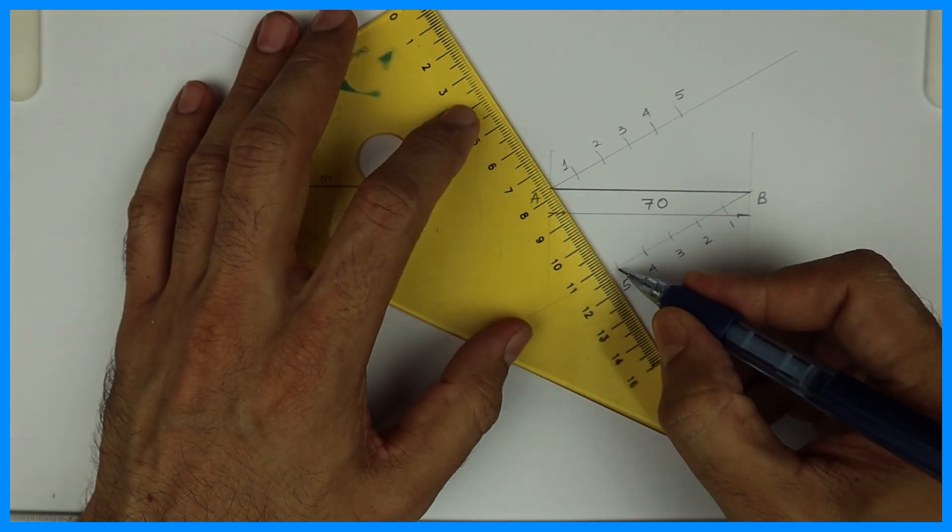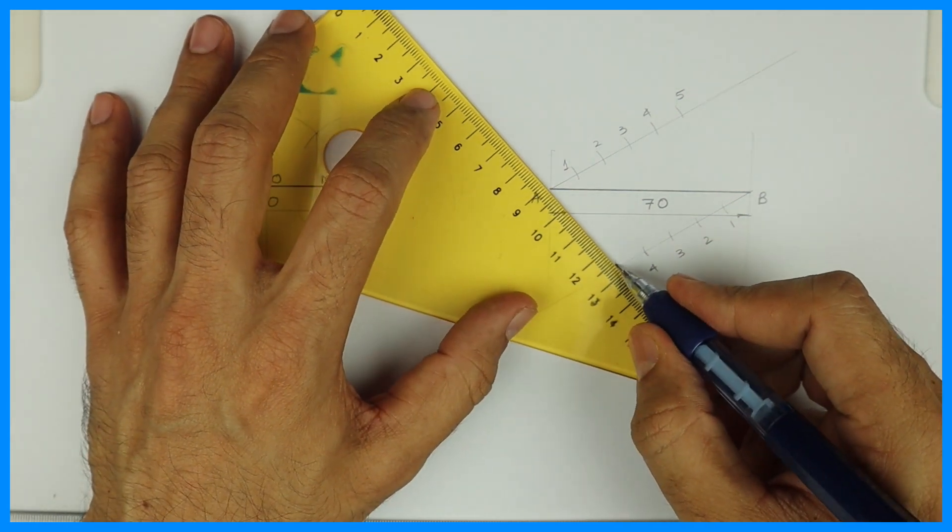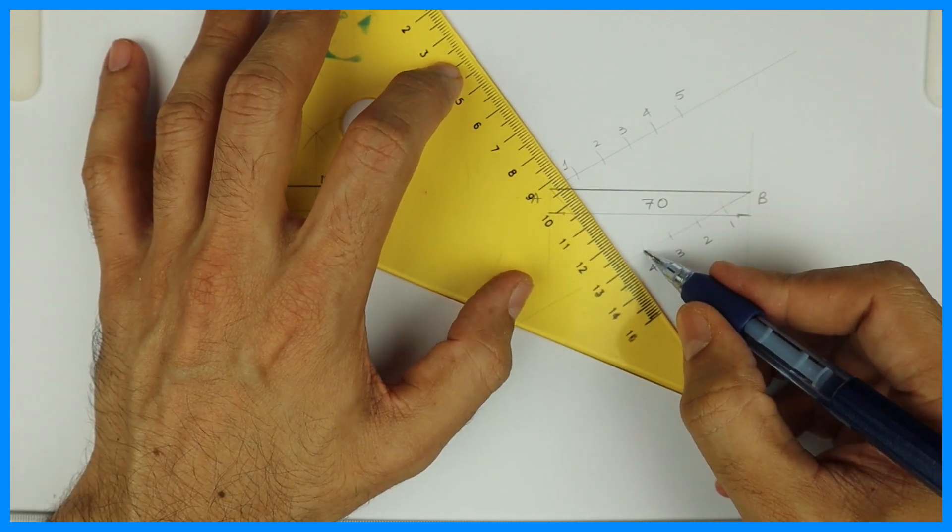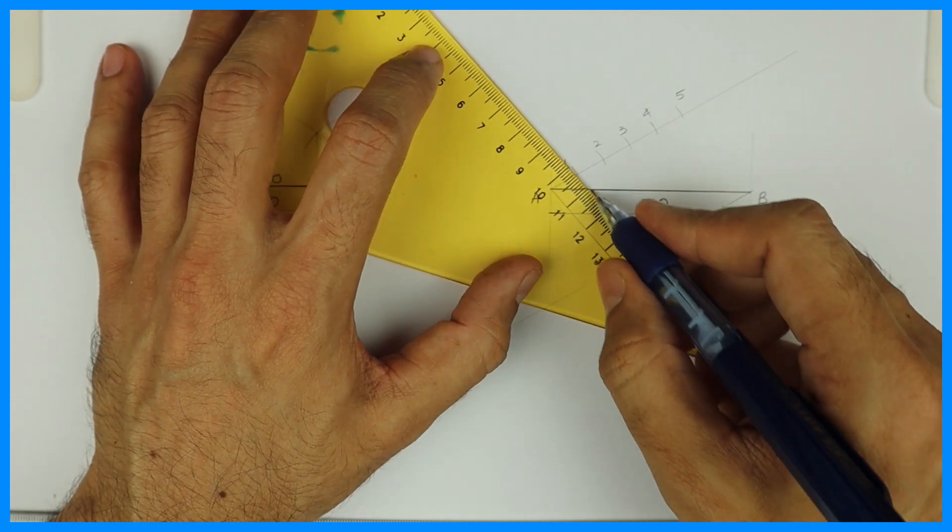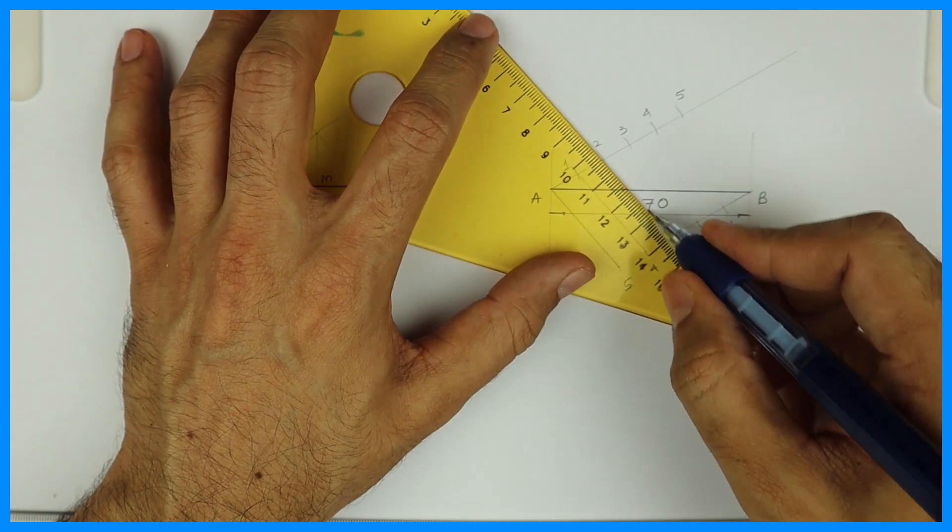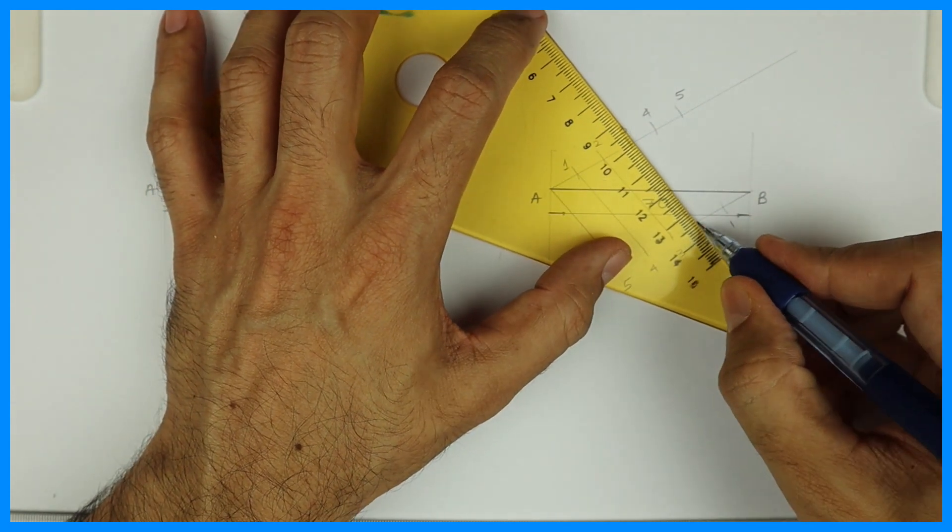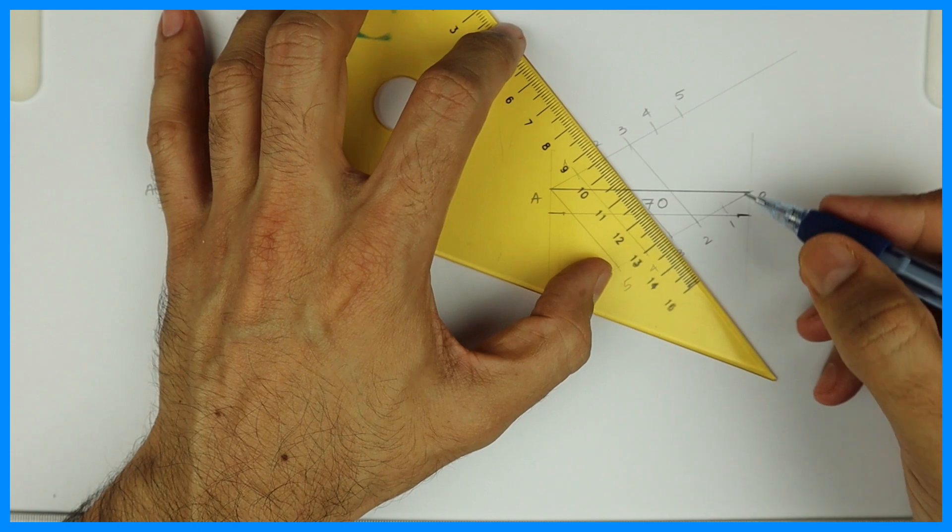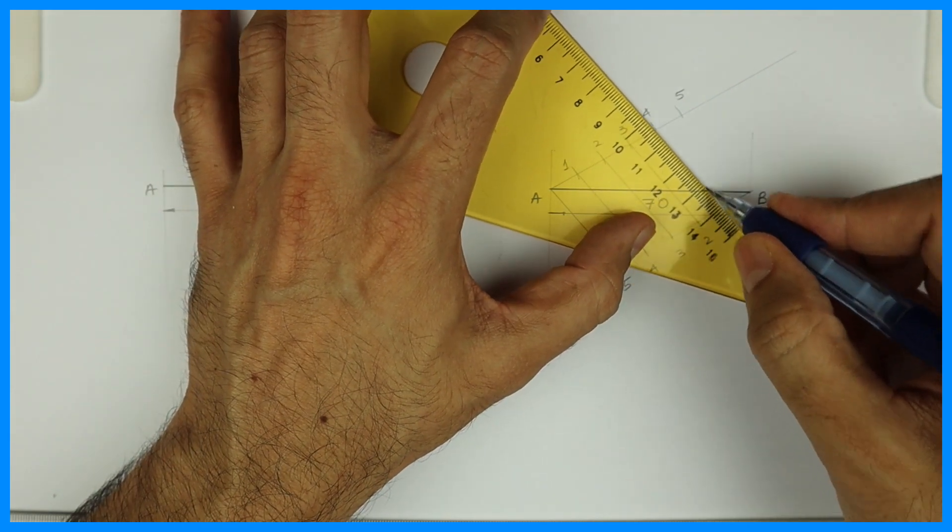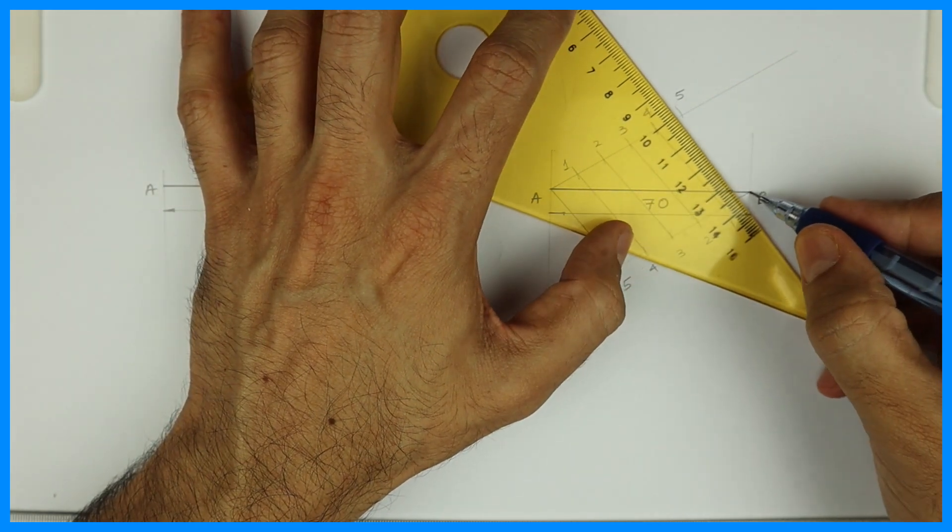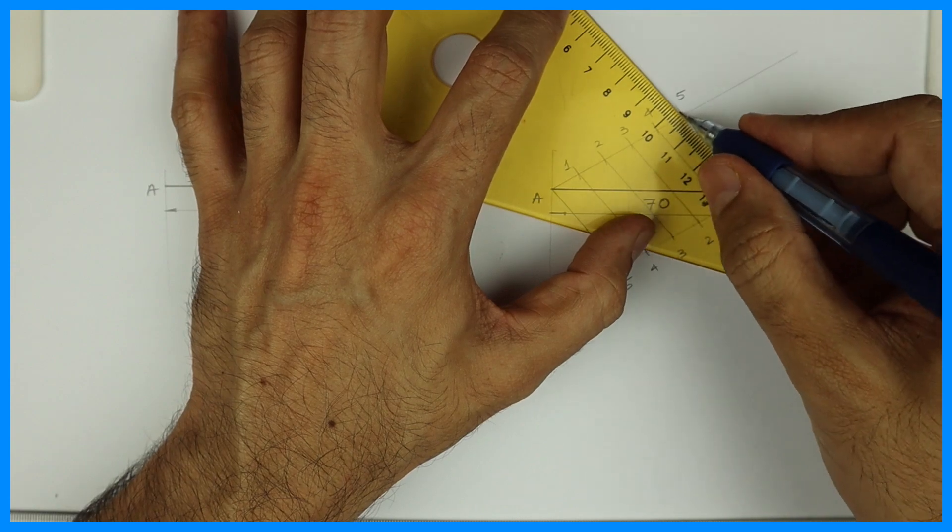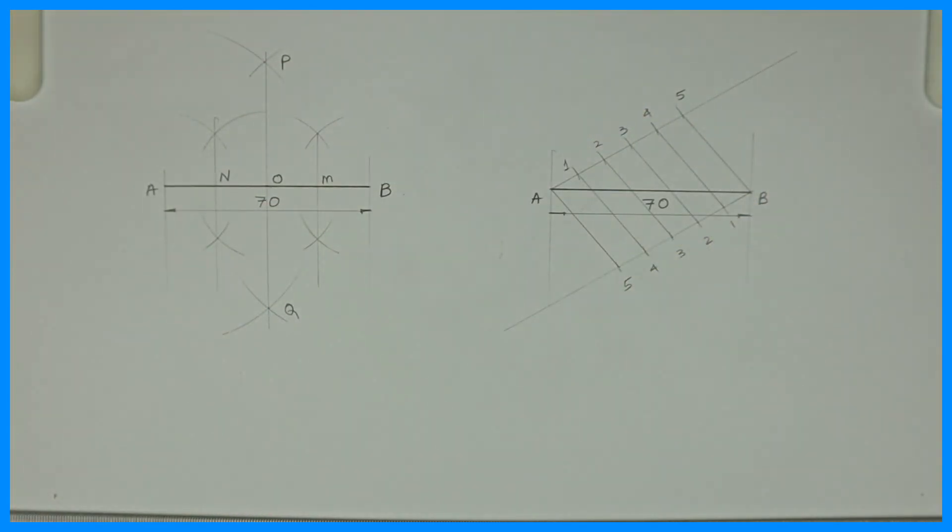Now you join A to 5, 4 to 1, 3 to 2, 2 to 3, 1 to 4 and B to 5. So you have divided line AB into 5 parts.